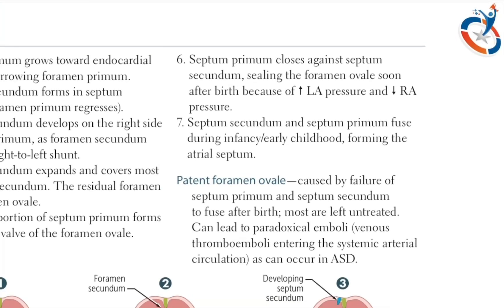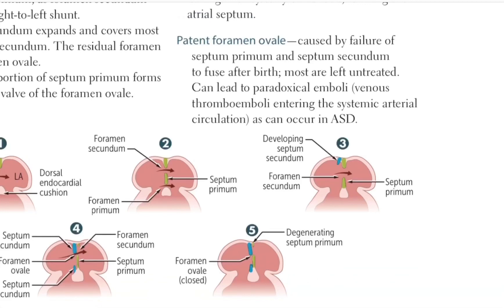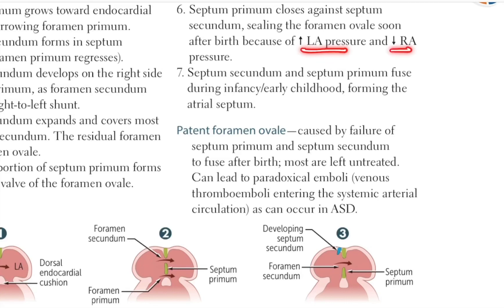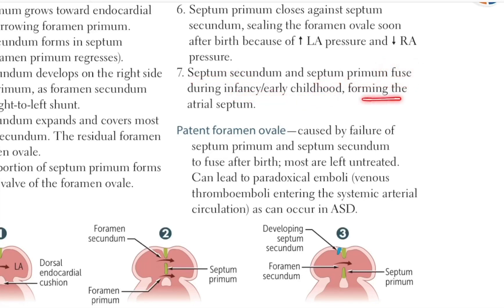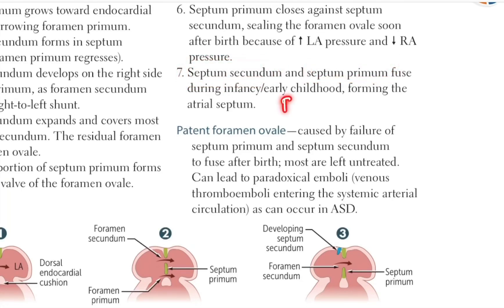In the sixth and seventh steps, the septum primum closes against the septum secundum. During the first breath of the infant, there is an increase in the left atrial pressure as compared to the right atrial pressure. The septum primum closes against the septum secundum, and there is sealing of the foramen ovale. This foramen ovale gets converted to fossa ovalis — the remnant of foramen ovale is called as fossa ovalis. The septum secundum and septum primum fuse during infancy or early childhood, forming the atrial septum.